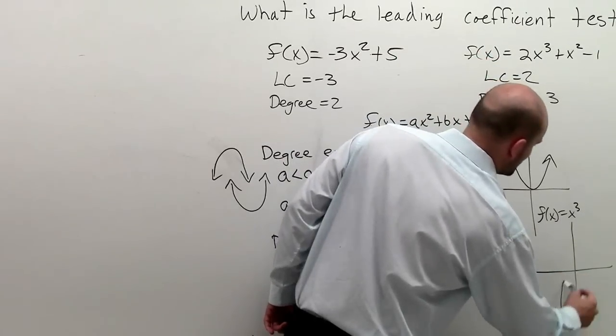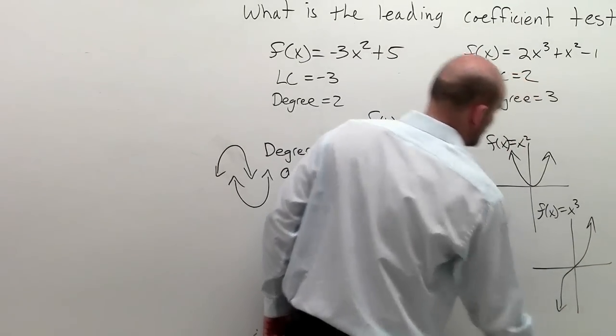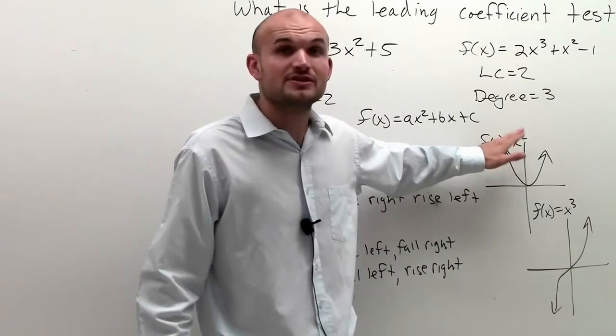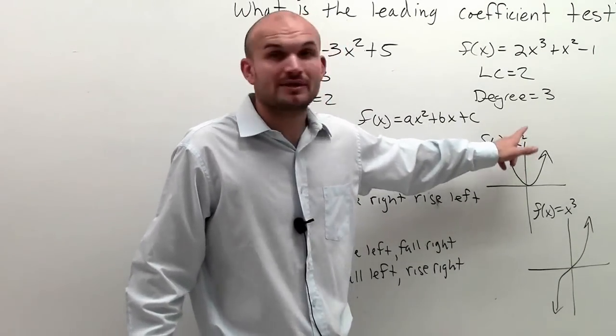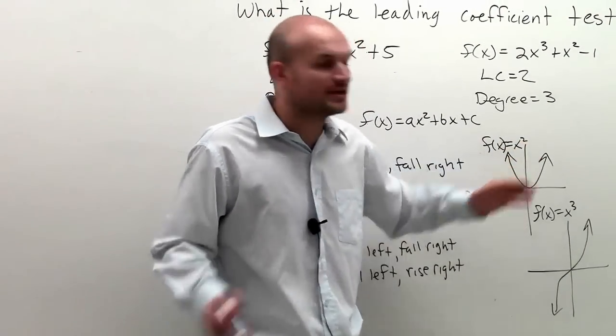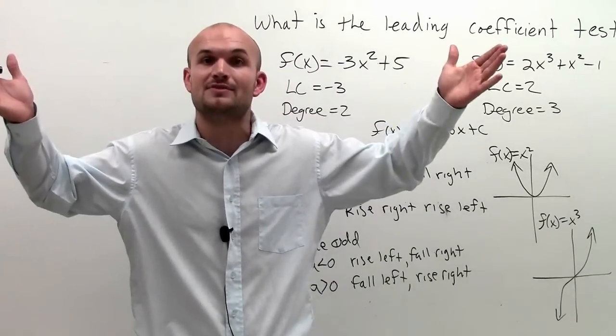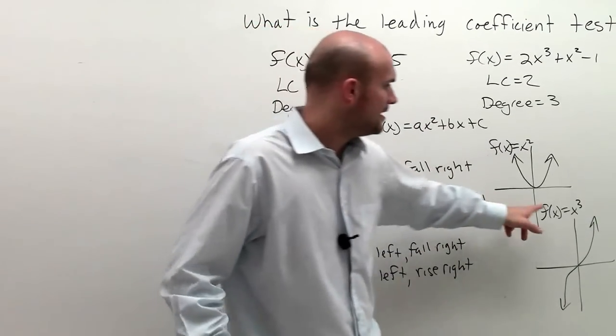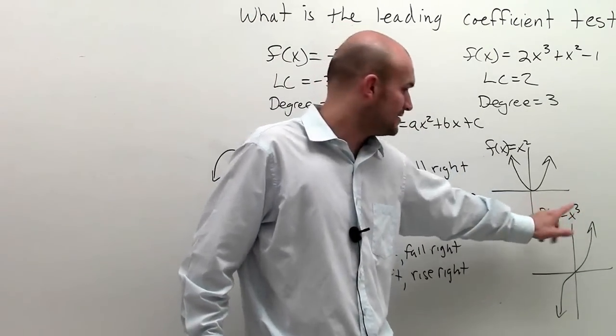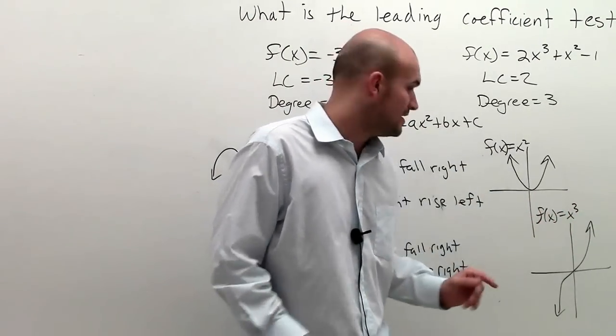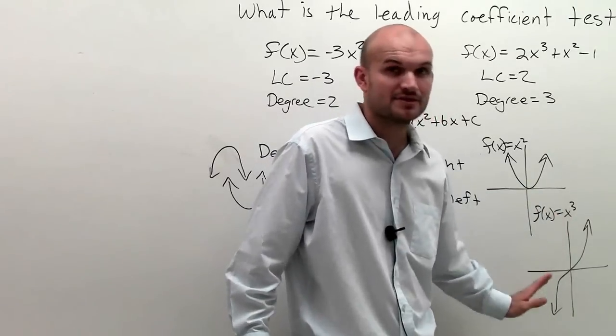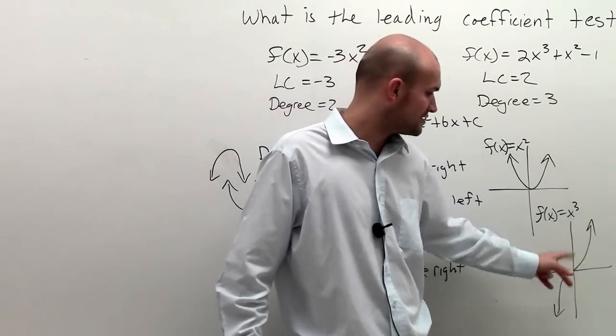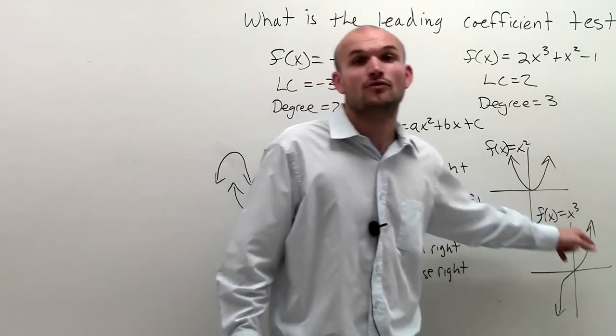And x cubed looks like that, right? So if you can always remember, when my coefficient is positive and my degree is even, no matter what it's going to look like, it's always going to rise left and rise right. And if my coefficient is negative, it's just going to be the opposite. However, for any odd, when my coefficient is positive, I'm always going to fall left, rise right. And if it was negative, it's going to be the reverse. It's going to rise left, fall right.